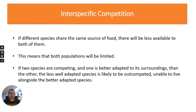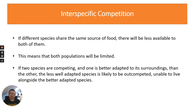On to inter-specific competition. If different species share the same resources and the same source of food, there will be less available to both of them, so both populations will be limited. If two species are competing and one is better adapted to its surroundings, then the less well-adapted species is likely to be out-competed and unable to live alongside the better-adapted species.